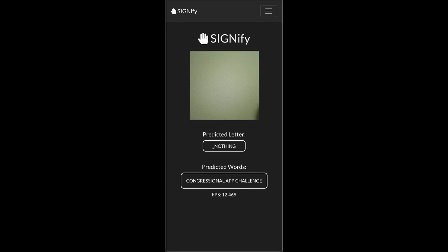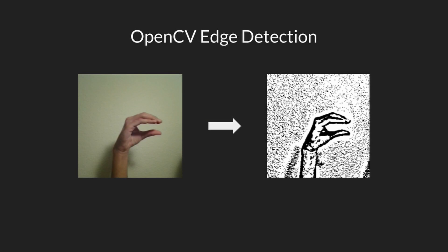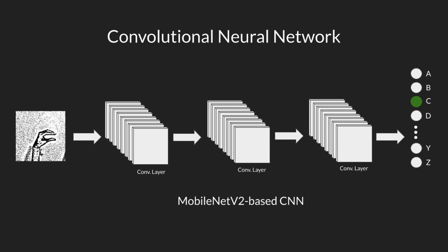Our machine learning model has two steps. The first step is an edge detection transformation using OpenCV, which converts a single frame of video into a binary image, making the hand stand out from its surroundings. The second step is a convolutional neural network, or CNN, which takes the edge-detected image and outputs the letter it most resembles.